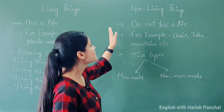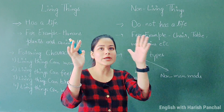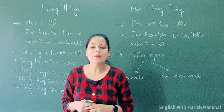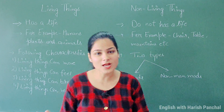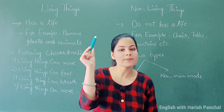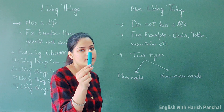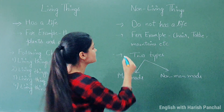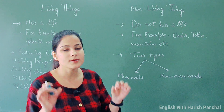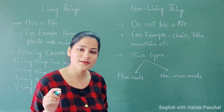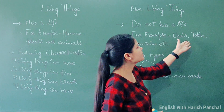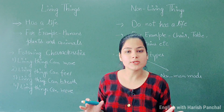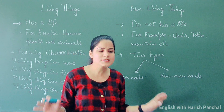For example, you cannot see a chair moving on its own. If you keep the chair in front of yourself, it stays in place. Just like a chalk holder — when you keep it down, there is no movement. But when I pick it up and write on the board, that is called movement. Examples of non-living things include mountains, chair, table, tube light, and trees.